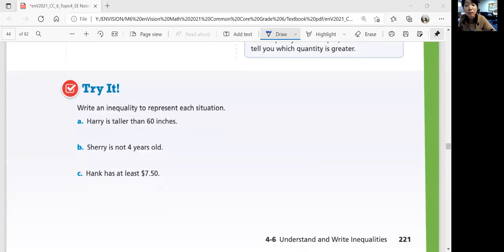Let's look at this try it question. Write an inequality to represent each situation. Harry is taller than 60 inches. How would you write an inequality? Shuri is not four years old. Hank has at least 7.5 dollars. Come back when you're done.